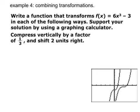Now we're going to combine transformations. This gets a little sticky, but if we just go in the order that it's given to us, we will get it right. So we have f of x equals 6x cubed minus 3. It says write a function, and then support your solution by using a graphing calculator. So you're going to graph it in your calculator and just check to see if you're right.